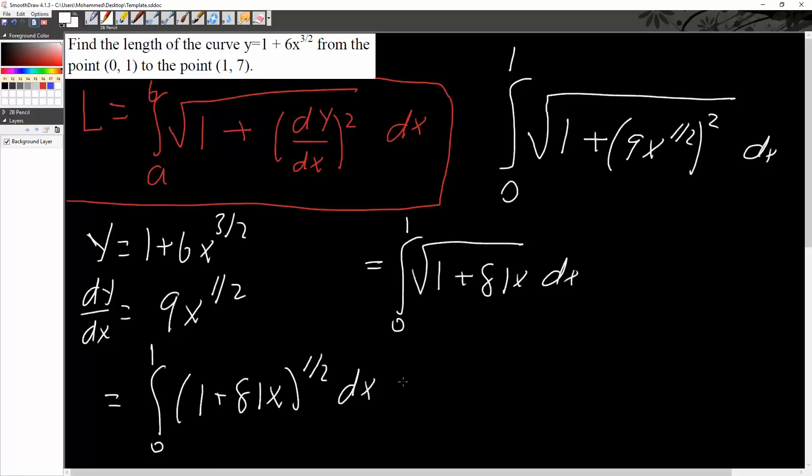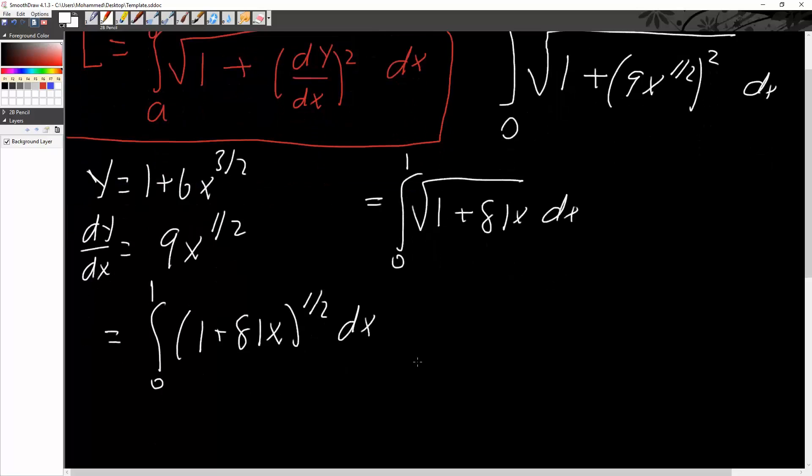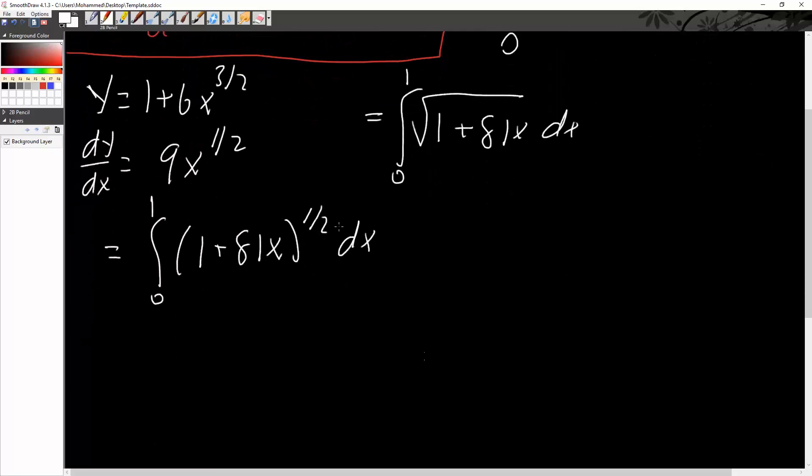And now taking the antiderivative is pretty simple. But there's one thing we need to do. We need to do some u substitution. So if we say that u is equal to the inside, 1 plus 81x, our du would therefore be 81 dx. So we can say that 1 over 81 du is equal to dx.